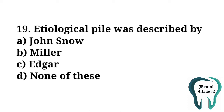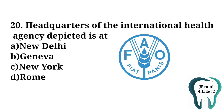Etiological pile was described by Miller, so the answer is again B. Headquarters of the international health agency depicted below: in the image you can see the logo of FAO or Food and Agricultural Organization. Its headquarters is at Rome, Italy, so the answer is D — Rome.